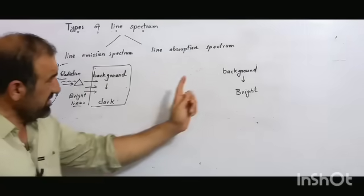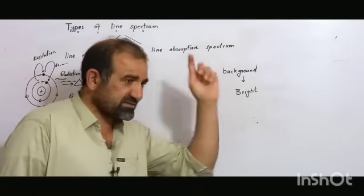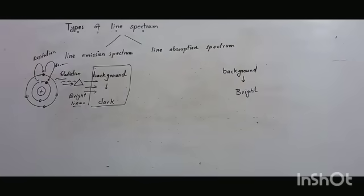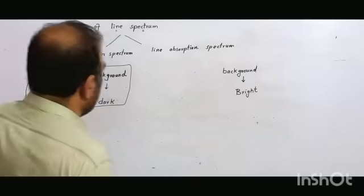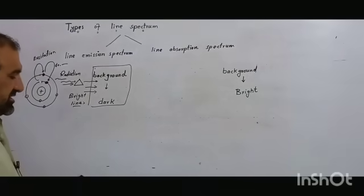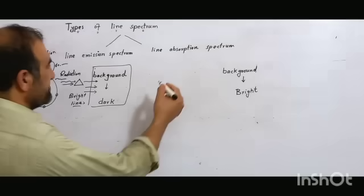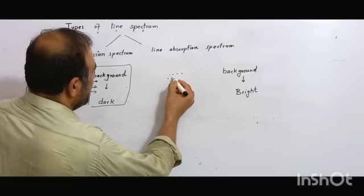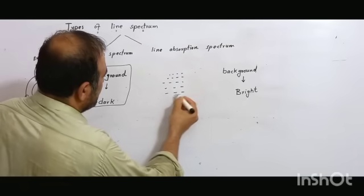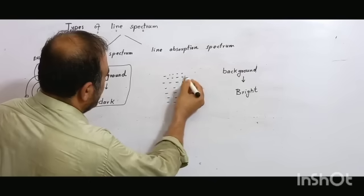A hotline absorption spectrum — the explanation: these are the core wavelengths of an element. The atom's core wavelengths are the signature of the element.